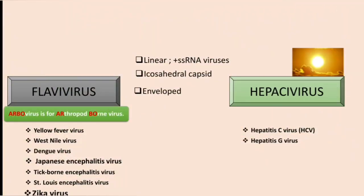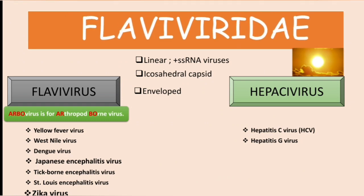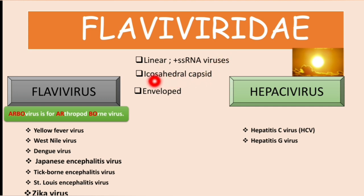The Zika virus belongs to the family Flaviviridae. The general features of viruses in this family are: they are linear single-stranded positive-sense RNA viruses, they have an icosahedral symmetry or capsid, and they have an envelope.